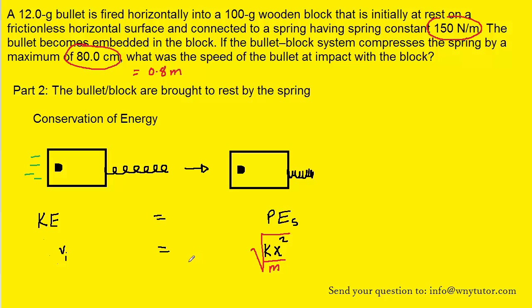And then m will be the mass. Now, note that the mass will be of both the bullet and block together, since they are basically the same object in this part of the problem. They're embedded within each other. So we'll have to add the mass of the bullet, which was 12 grams, and the wooden block, which is 100 grams. Of course, that's going to be 112 grams. But again, converting to standard units would give us 0.112 kilograms.